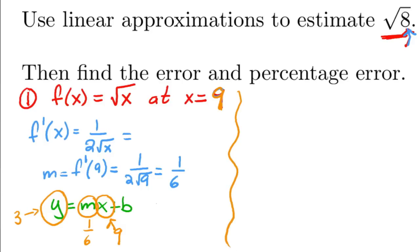Okay, so if you do this, you get that b is equal to 3 minus, here we have 9 times 1 sixth, which is simply 3 halves. And so, 3 minus 3 halves is just 3 halves.